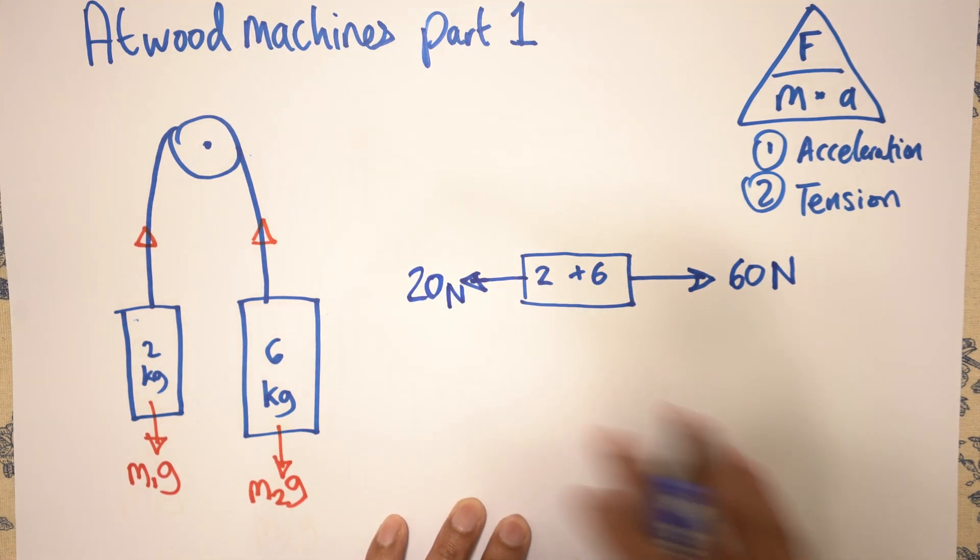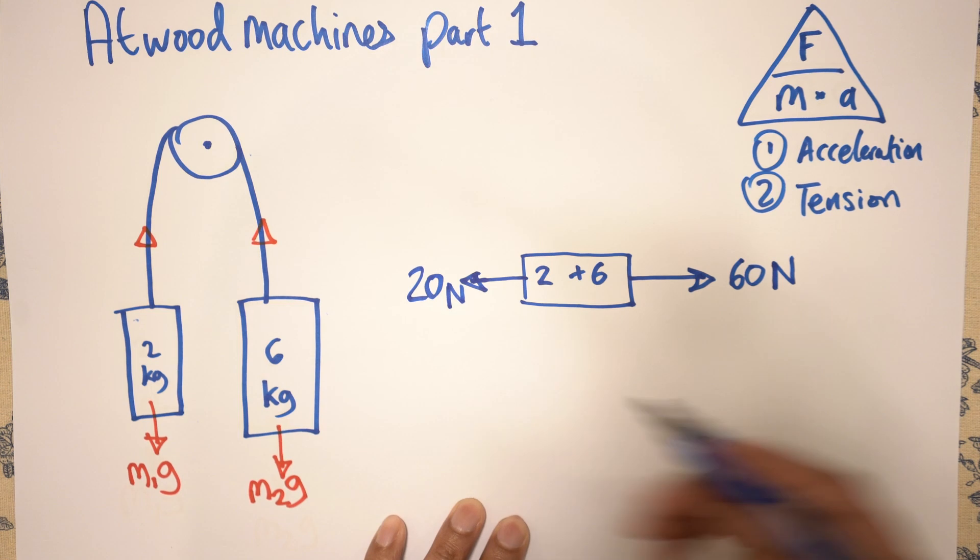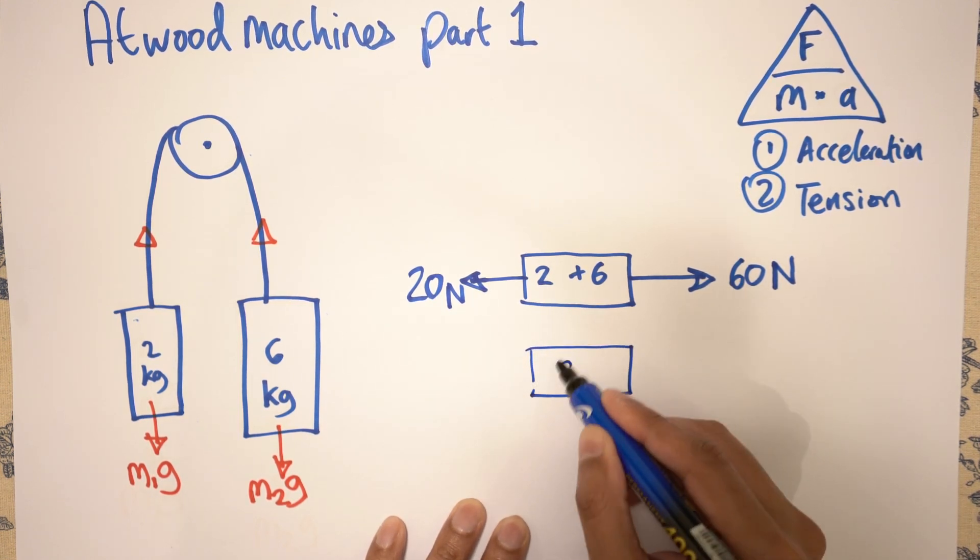Now it's a simple net force question, right? And that net force question is basically find out the acceleration, which is F equals ma. So again, we simplify this. So then 2 plus 6 is 8 kg.